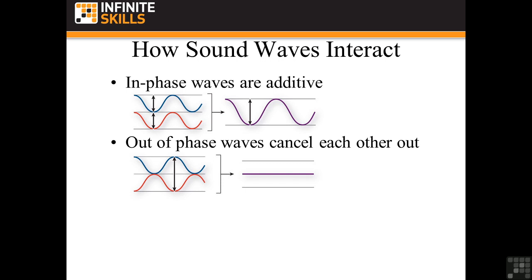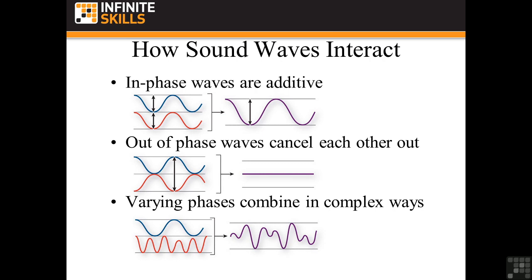If you think of a dip as a negative number and a rise as a positive number, those two together give you zero. You won't encounter exactly out-of-phase waves in the real world, but that's how it works. What you will encounter is varying phases combined in complex waves. If you look at that big blue peak on the right-hand side, the red peak below it combines together to make a bigger peak in the purple wave. So they add together when both are going up, and they work against each other when one's going up and one's going down.